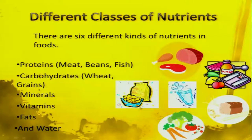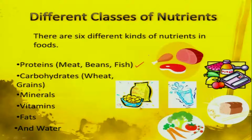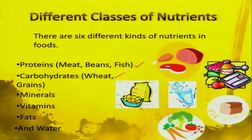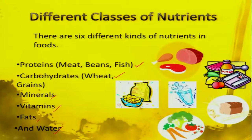All the foods have these nutrients. There are six different types of nutrients in our food: protein, which is present in meat, beans, fish and pulses; then carbohydrates, which is present in all the cereals and millets, roots and tubers; then minerals, vitamins, fats and water. Water also is a main nutrient. So, let us see each of these nutrients in detail.